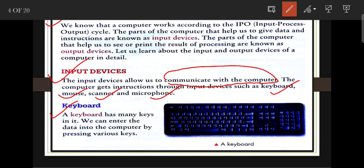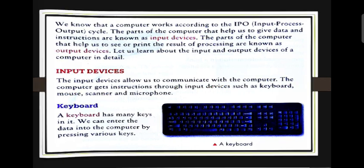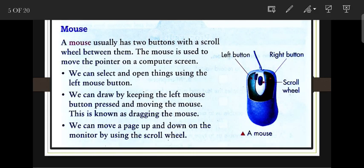First is the keyboard. A keyboard has many keys on it. We can enter data into the computer by pressing various keys. There are different types of keys available: number keys, alphabet keys, and special keys. We use these keys to instruct the computer.